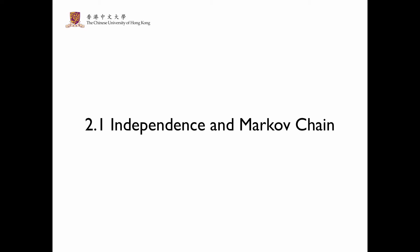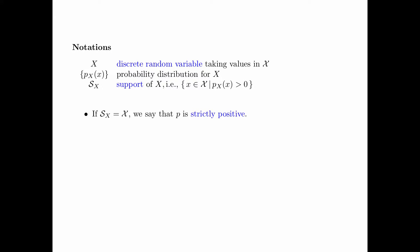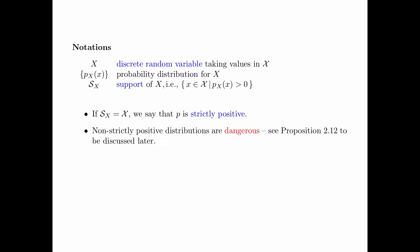Section 2.1 is about independence and Markov chain. Here are some notations used throughout this course. Capital letter X denotes a discrete random variable taking values in a set script X, called the alphabet of the random variable X. P is the probability distribution for X. The support of X, denoted S(X), is the set of all outcomes x such that the probability is non-zero. If the support of X equals the alphabet of X, then all probability masses are positive. Non-strictly positive distributions are dangerous and need to be handled with great care, as illustrated in Proposition 2.12.